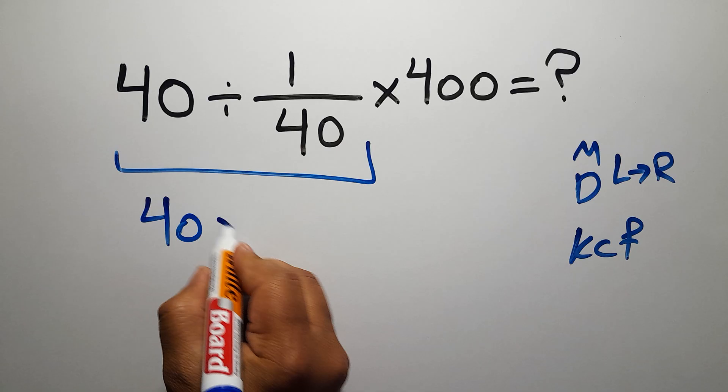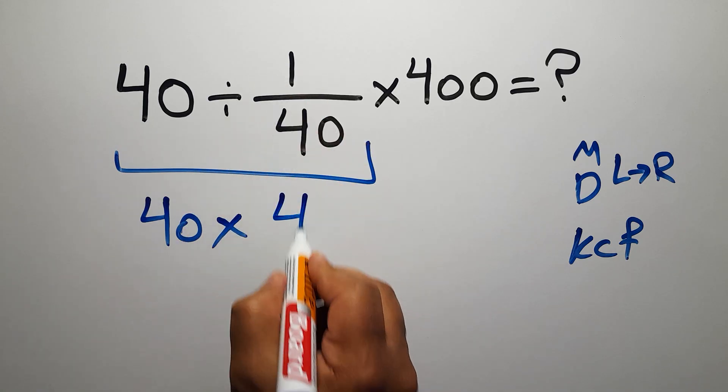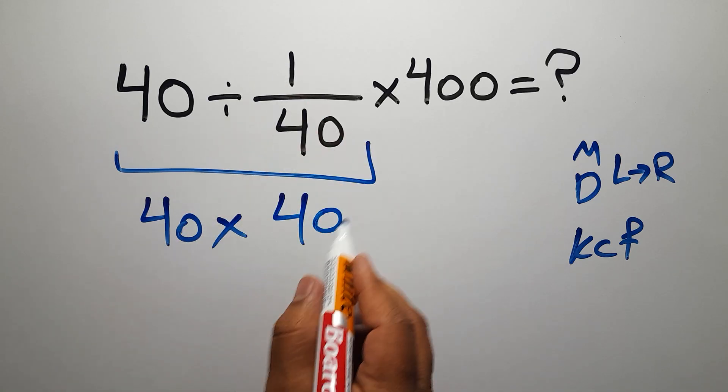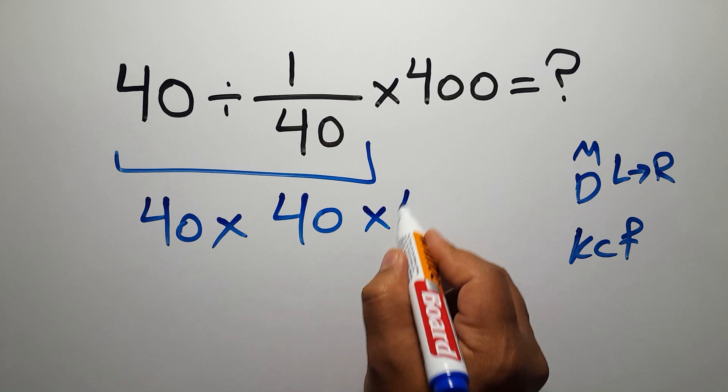Change the division to multiplication and flip the second fraction. So we have 40 times 40 times 400.